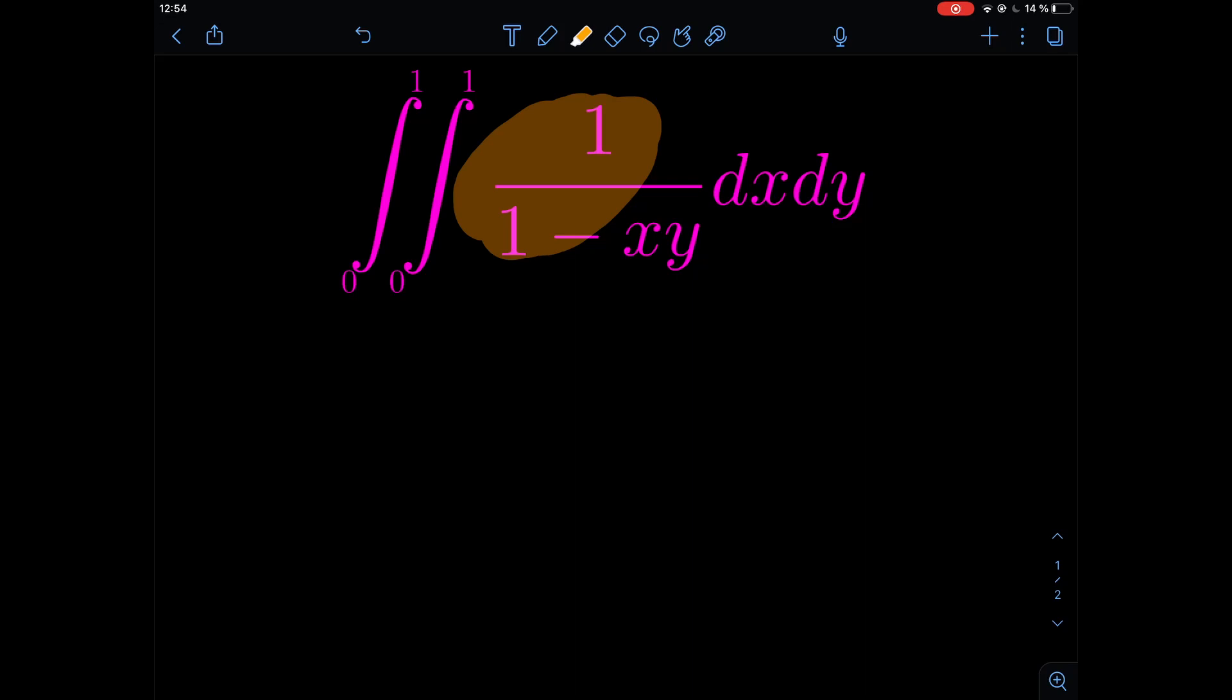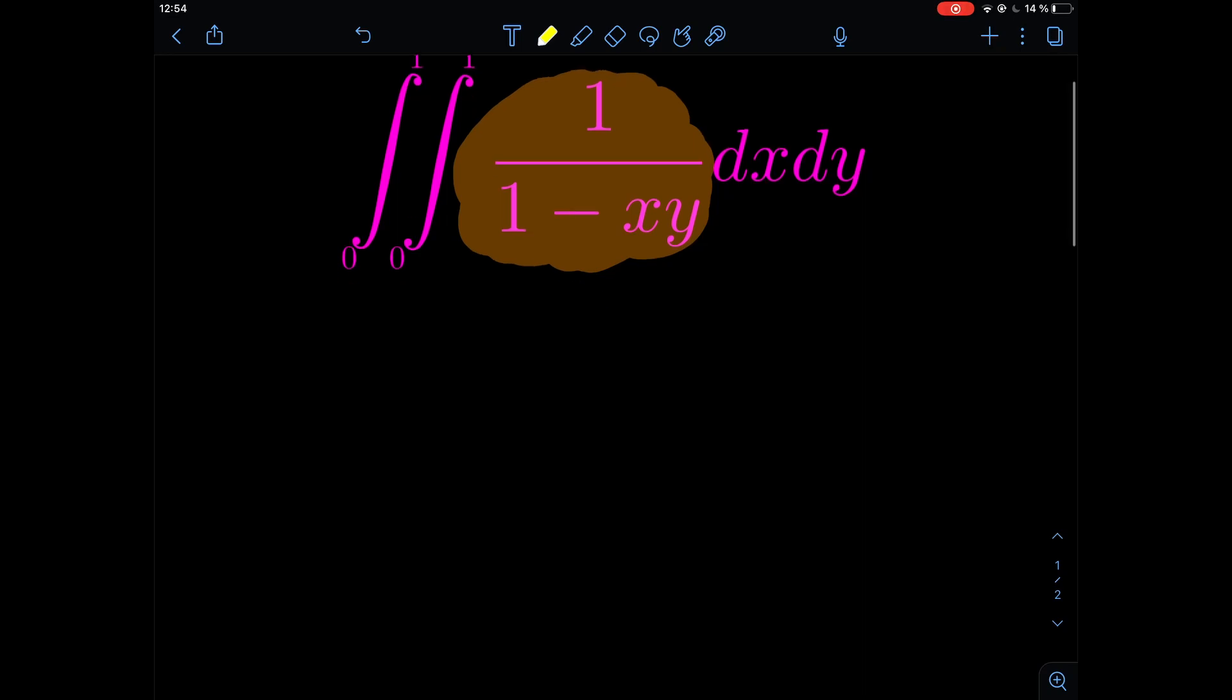We have to use the geometric series, and therefore we take a look at the integrand because the integrand somehow looks like the value that a geometric series converges to. When you remember, the geometric series is the sum from n equals 0 to infinity over r to the power of n, and this converges to 1 divided by 1 minus r in case that the absolute value of r is smaller than 1.